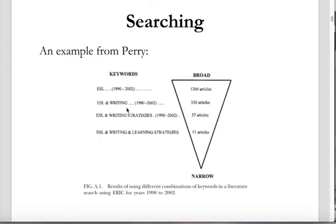This is meant to illustrate that if you go too general, it's not going to be helpful. If you just search 'ESL' in the Applied Linguistics Database, you find 1,200 articles — that's not helpful and won't direct you to anything relevant to your research. So we're always striking a balance between finding the most specific things related to our research topics while also recognizing we might need to go a little broader to get background information on components of what we're researching.